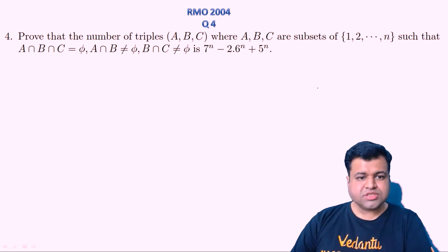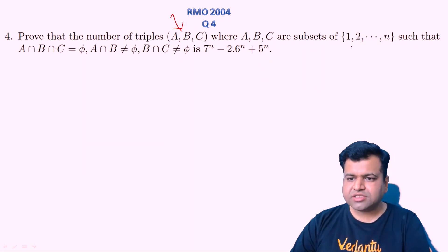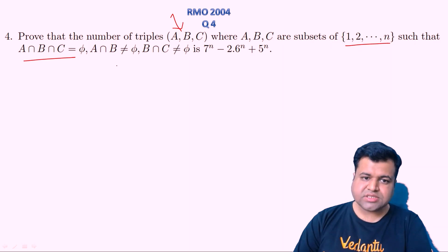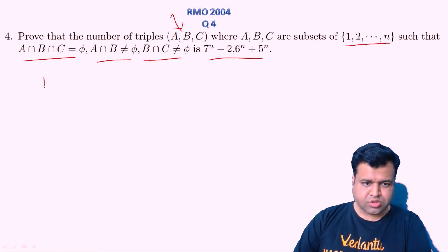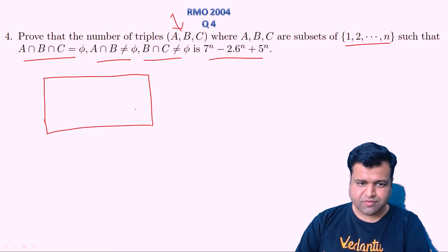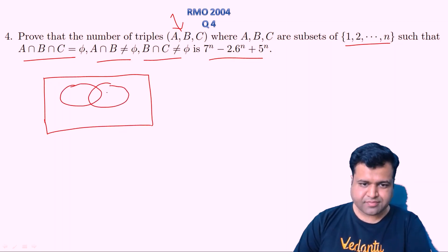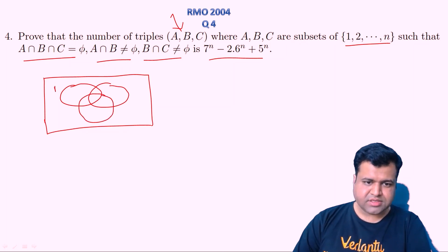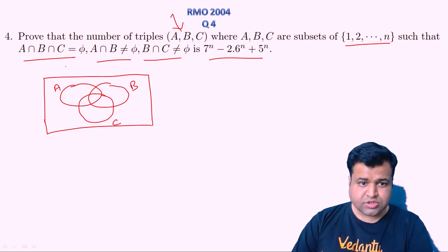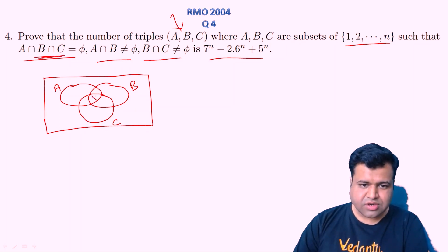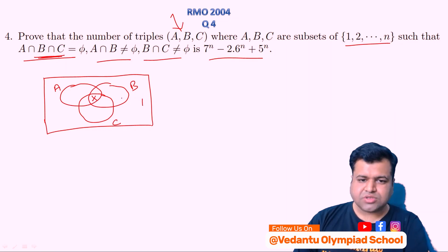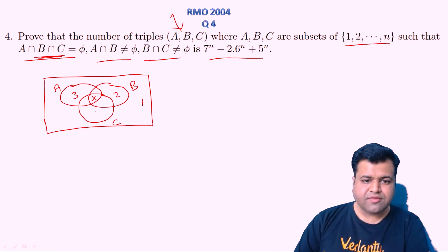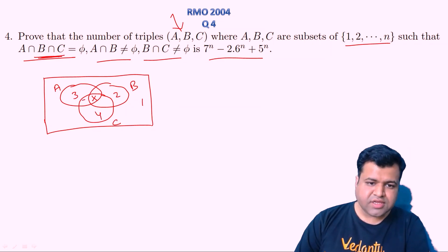Now let's proceed to question 4. This is a very easy question. The question says: prove that the number of triples (A, B, C) where A, B, C are subsets of the first n natural numbers, such that A∩B∩C is empty, A∩B is not empty, and B∩C is not empty, equals this many. To solve such type of questions, we need to make a Venn diagram. We divided the whole sample space into seven regions: outside A, B, C; only in B; only in A; only in C; common to A and C; common to A and B; and common to B and C.